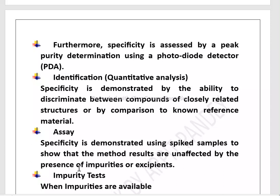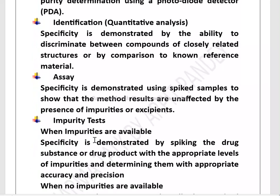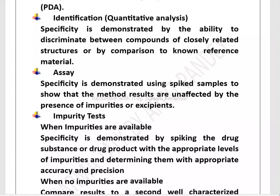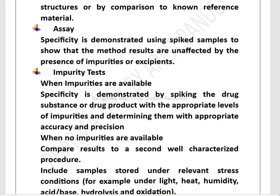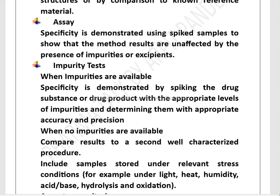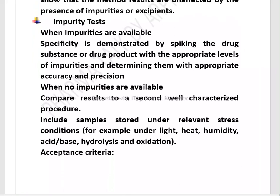In an impurity test, how do you perform specificity? When impurities are available, specificity is demonstrated by spiking the drug substance or drug product with the appropriate level of impurities and determining them with appropriate accuracy and precision. When no impurities are available, you compare results to a second well-characterized procedure, including samples stored under stress conditions such as light, heat, humidity, acid/base hydrolysis, and oxidation.